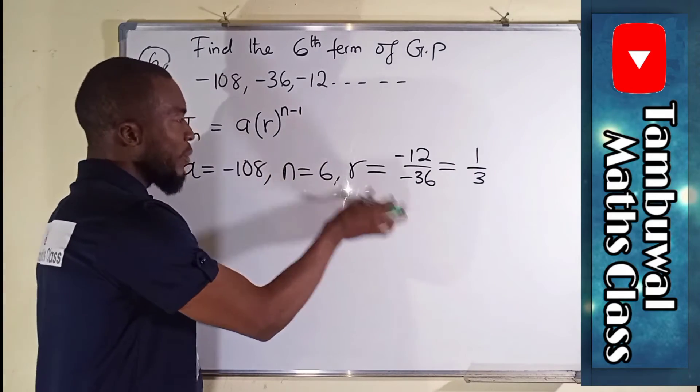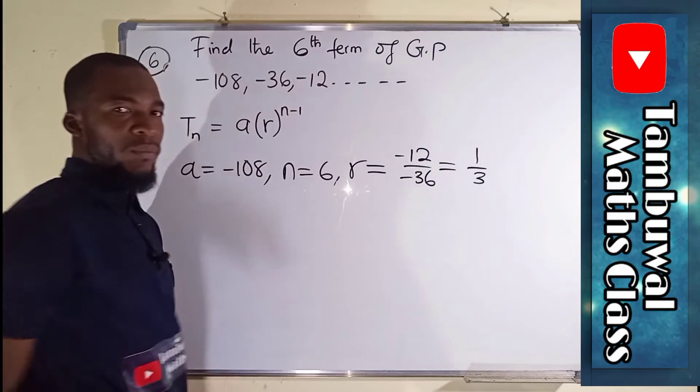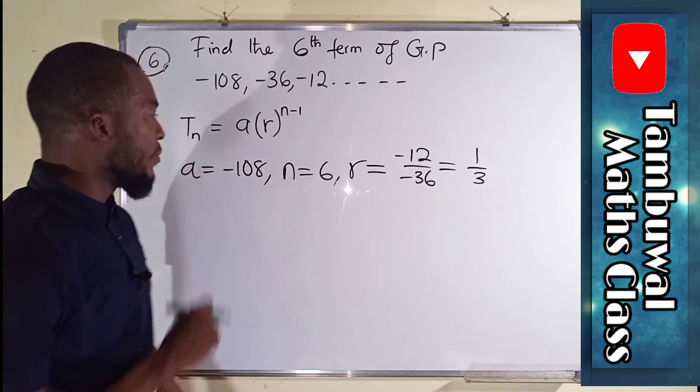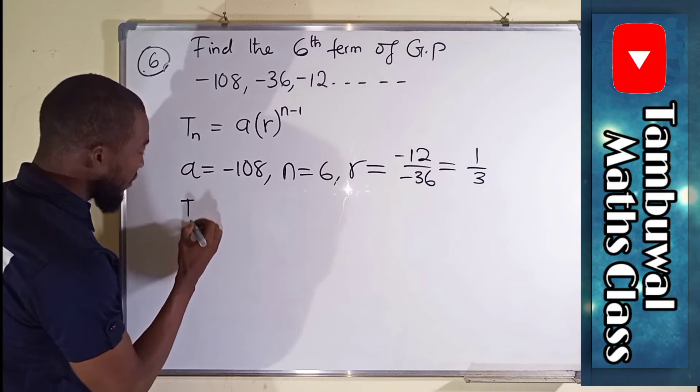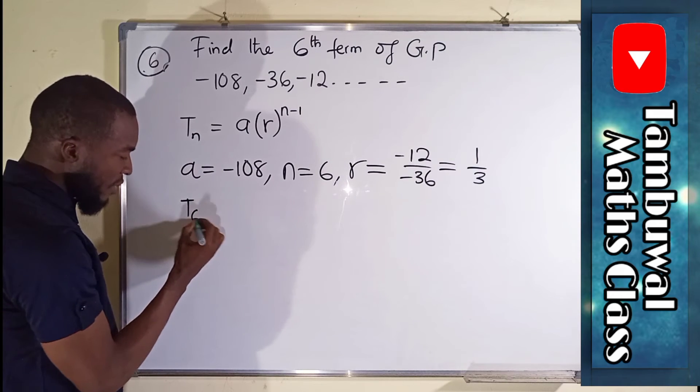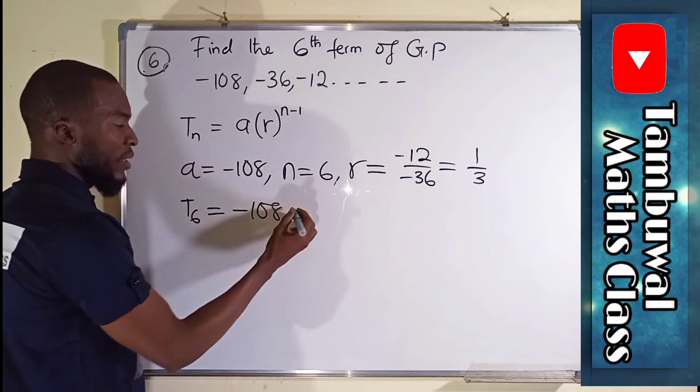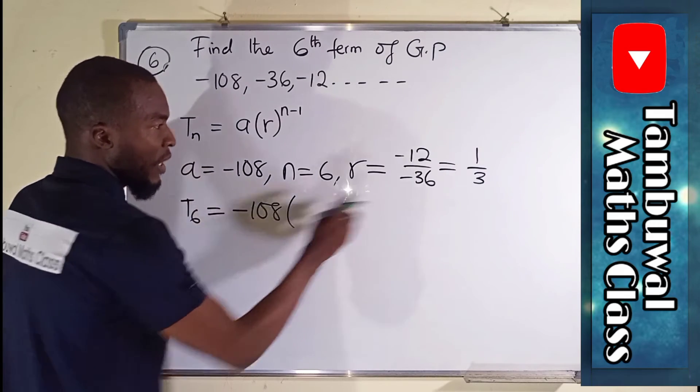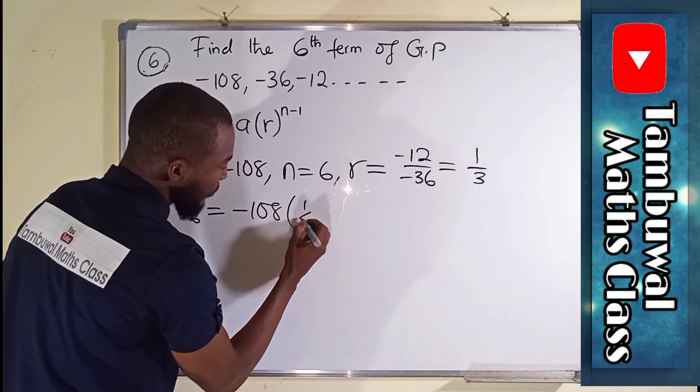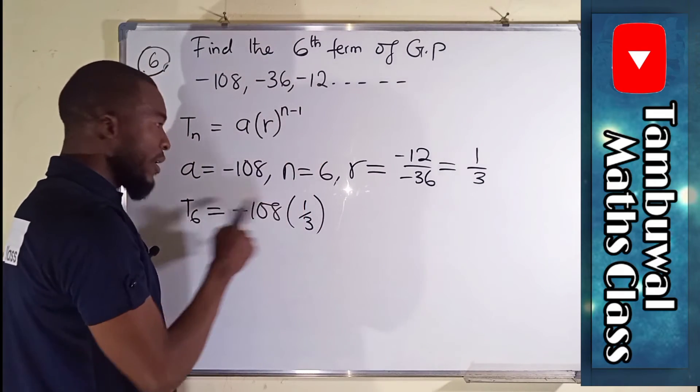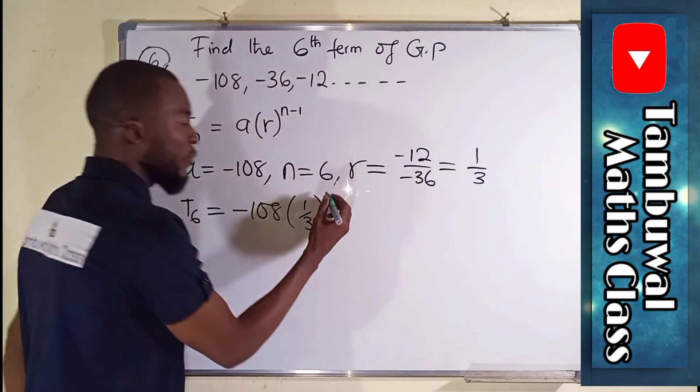Now we can substitute this information here to obtain the sixth term. And I will show you the shortcut to find this sixth term. So T6 instead of Tn, because we are looking for the sixth term, will now be equal to minus 108, which is our A, times R. And R is 1 over 3, raised to the power of n minus 1. Our n, remember, is 6. Minus 1 will give us 5.